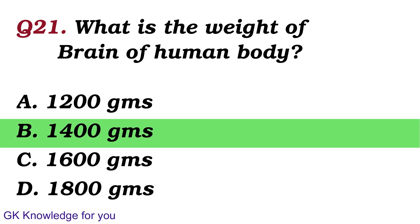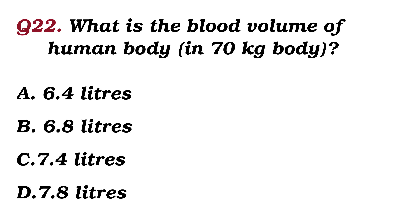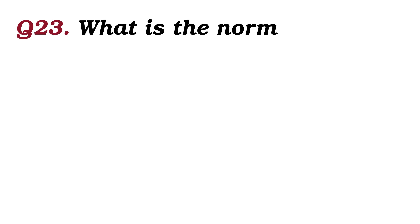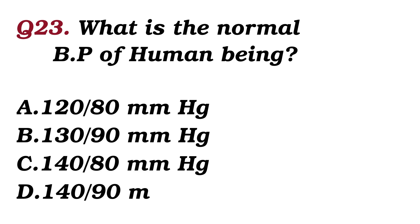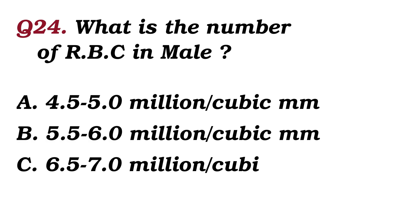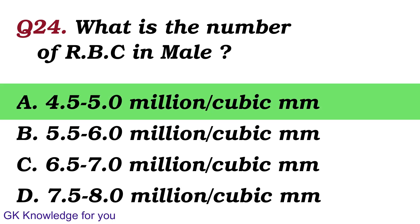What is the weight of the brain in the human body? The answer is 1,400 grams. What is the blood volume of the human body? The answer is 6.8 liters. What is the normal blood pressure of a human being? The answer is 120 over 80 mmHg. What is the number of red blood cells in a male? The answer is 4.5 to 5.0 million per cubic mm.